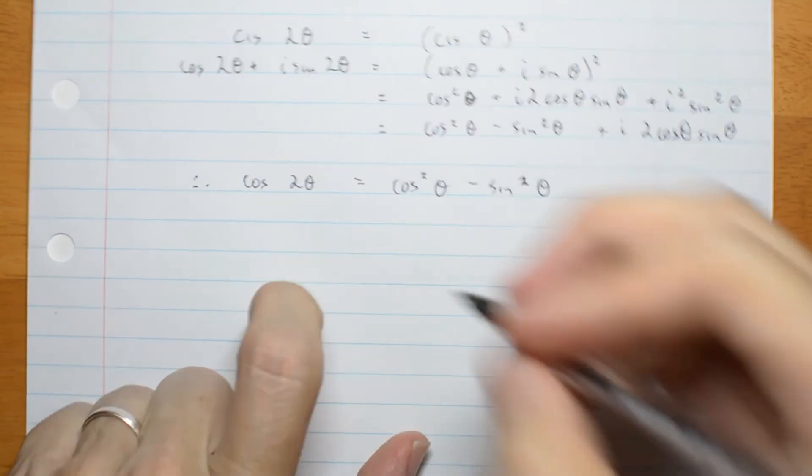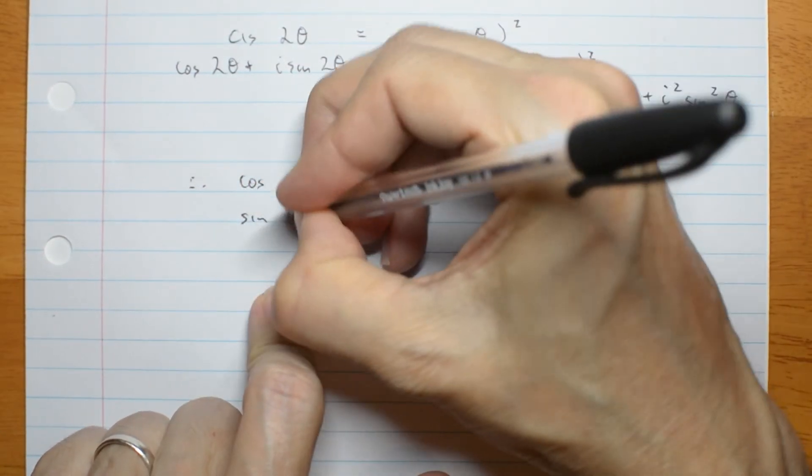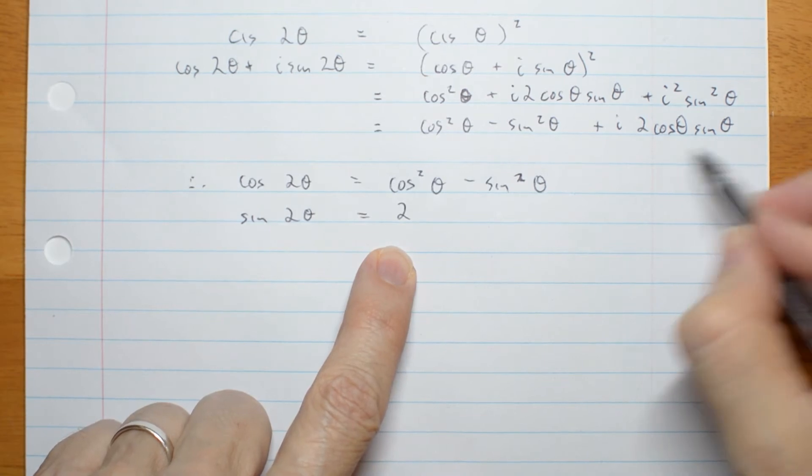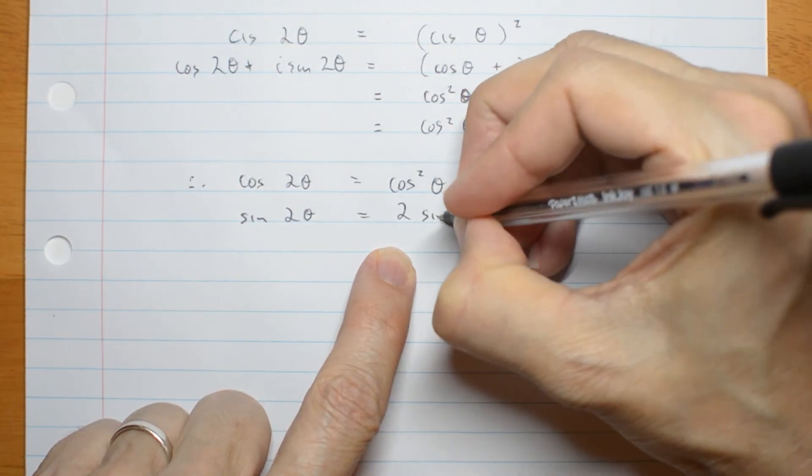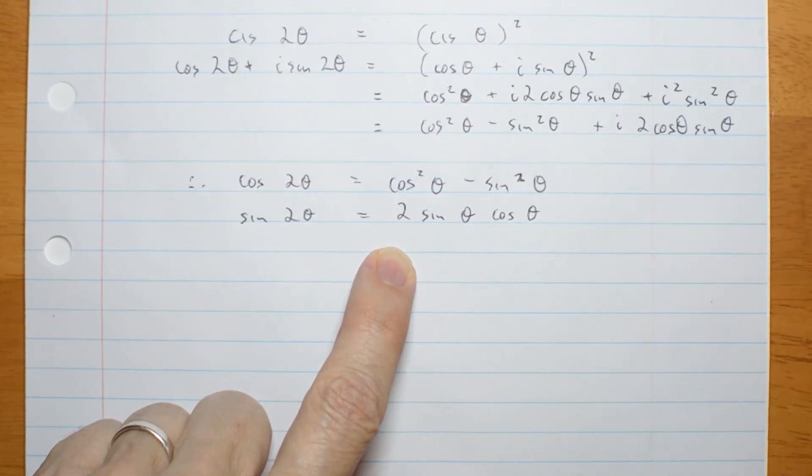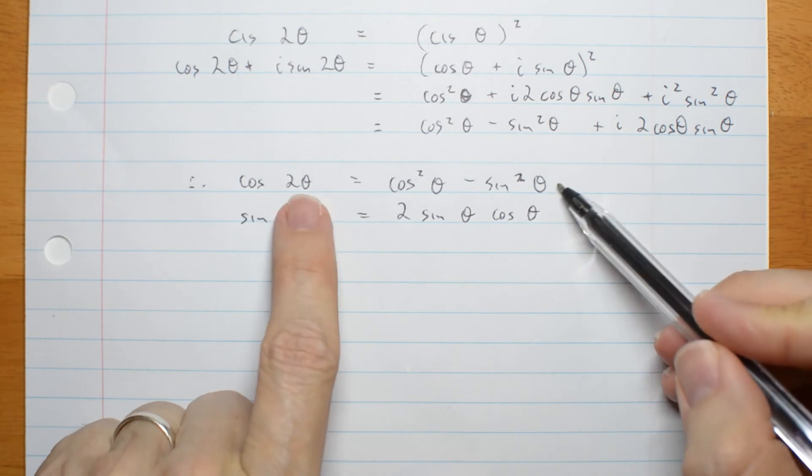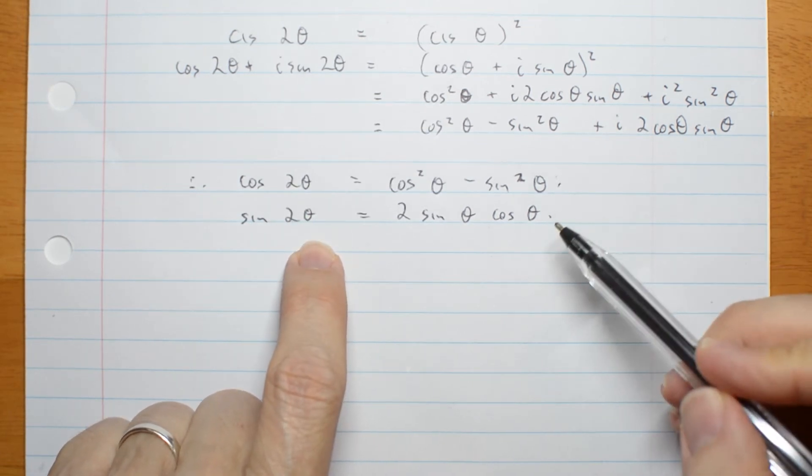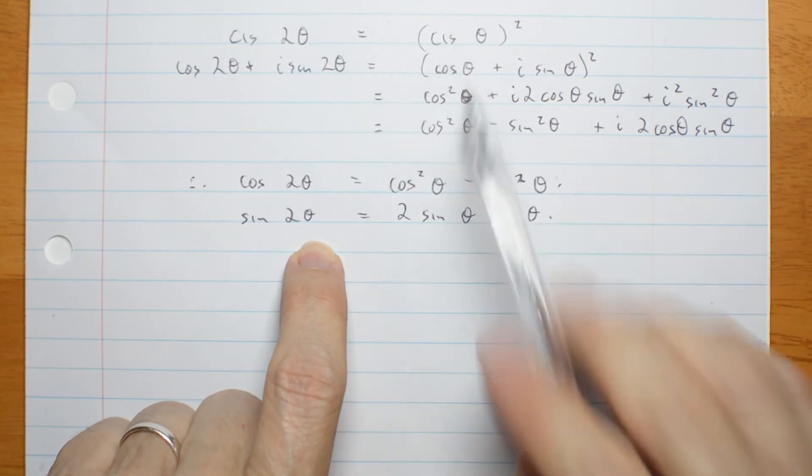And, imaginary parts, sin 2 theta is 2. I'm going to rearrange these the opposite way because year 12 should recognise it. And I have here two trigonometric identities that just fell out very simply from an application of De Moivre's theorem.